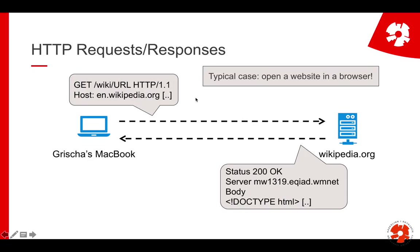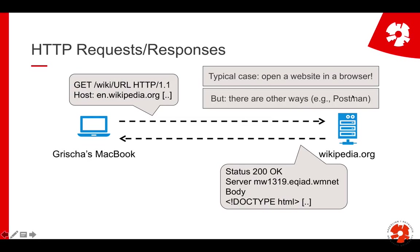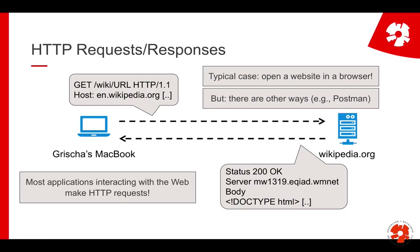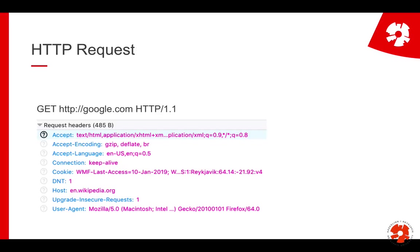The typical case of doing an HTTP request is when you go to your browser and open a website — that's by far the most typical request. But there are many other ways; you can do the same with Postman software, which we use in this course. When you use any app on your smartphone that downloads weather information, for example, that program is making an HTTP request in the background. HTTP requests are literally everywhere on the internet.